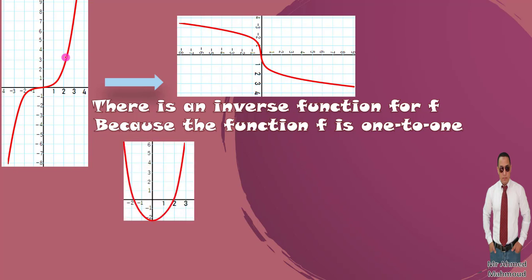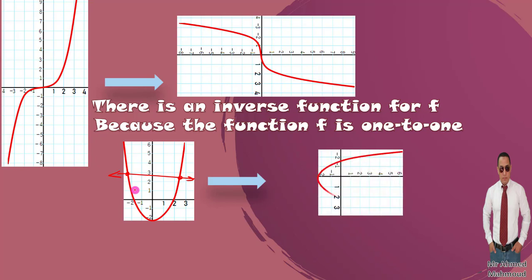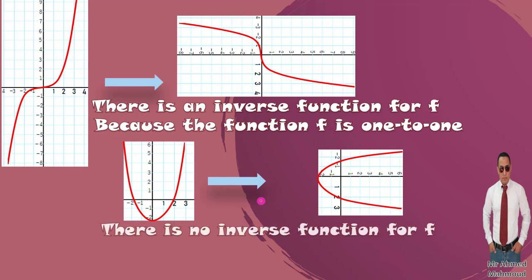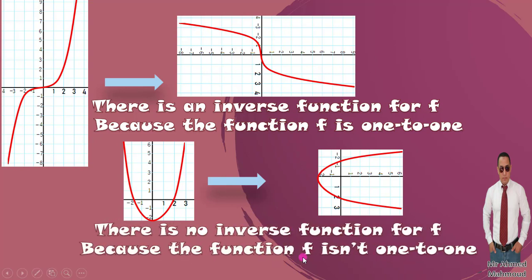Now let's take an example of a function that cannot have an inverse. This function is not one-to-one — the horizontal line intersects it at two points. If we perform the switch like before, the vertical line test shows it is not a function because one point has two images. So there is no inverse function for f because it is not one-to-one.